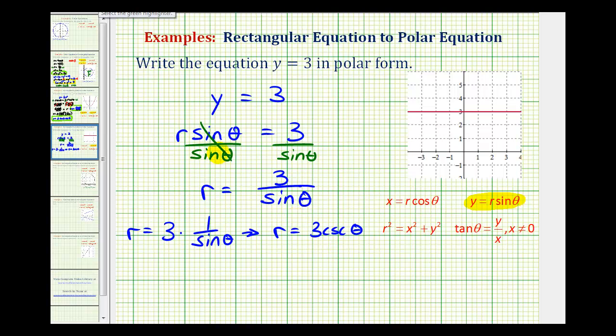So our polar equation could be r equals 3 divided by sine theta, or it could be r equals 3 cosecant theta.